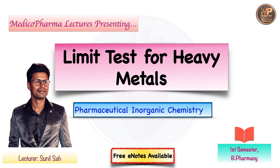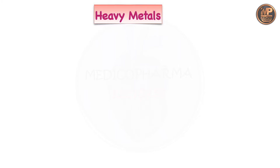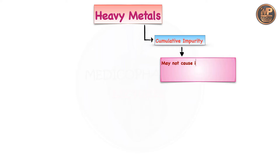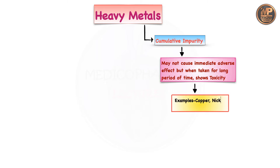So, can you guess which type of impurity is a heavy metal? Most of you might have thought it is a cumulative impurity, which is absolutely right. It is a cumulative impurity and it may not cause immediate adverse effects, but when taken for a long period of time it will accumulate in our body and then show toxicity. Examples are copper, nickel, cobalt, mercury, etc.